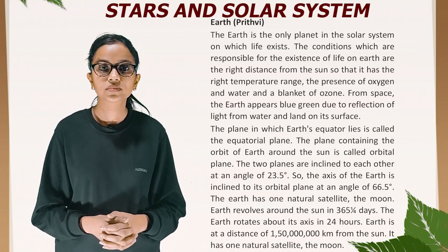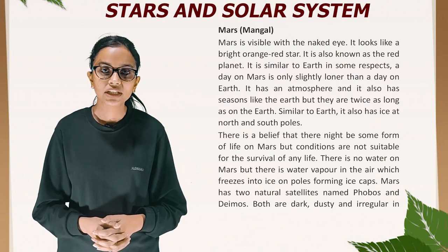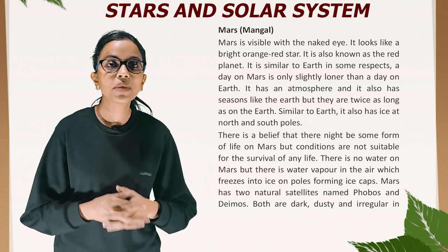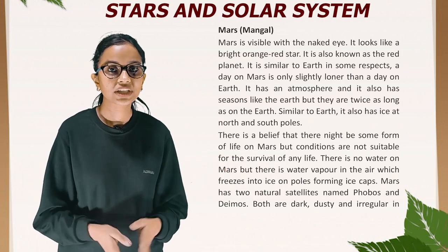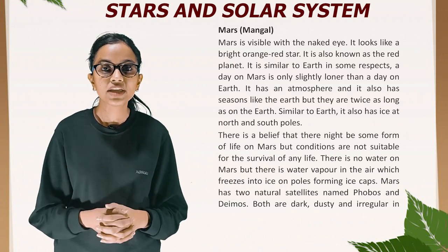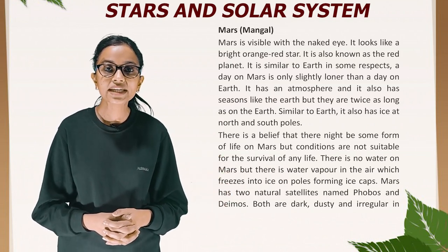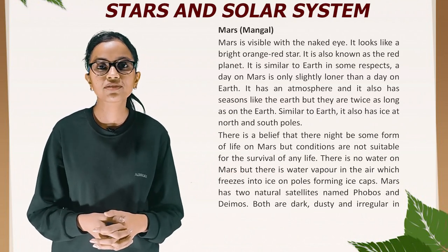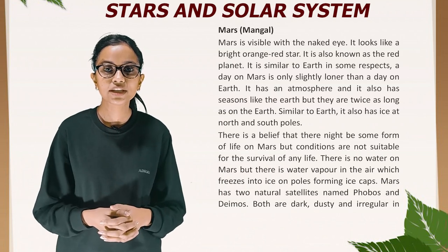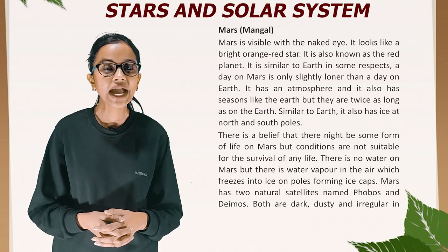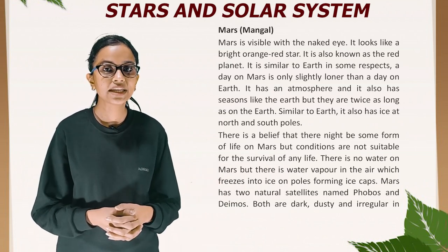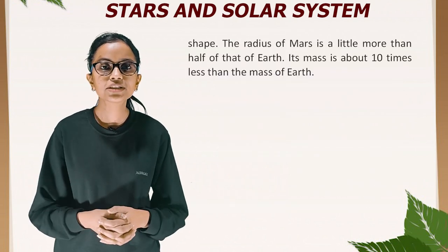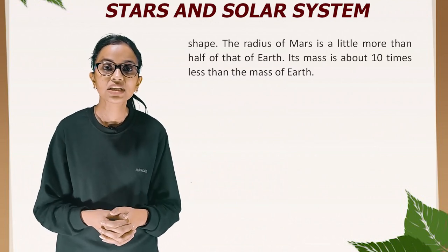Mars is visible with the naked eye and looks like a bright orange-red star; it is also known as the red planet. A day on Mars is only slightly longer than a day on Earth. It has an atmosphere and seasons like Earth, but seasons are twice as long. Similar to Earth, Mars also has ice at the north and south poles. There is a belief that there might be some form of life on Mars, but conditions are not suitable. There is no liquid water on Mars, but water vapor freezes into ice caps at the poles. Mars has two natural satellites — Phobos and Deimos. The radius of Mars is a little more than half that of Earth, and its mass is about 10 times less than Earth's.